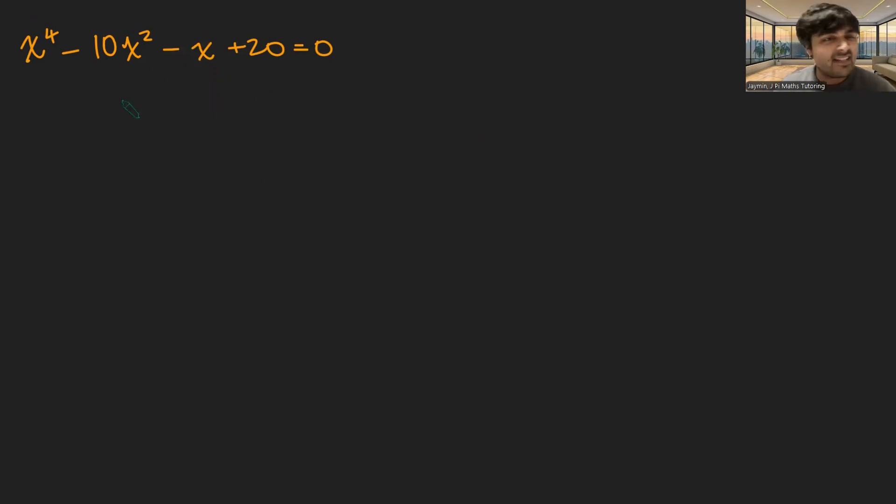What we're going to do is start by completing the square here. So we're going to get x squared minus 5, all squared, minus 25 minus x plus 20 equals 0. And if we just rearrange this, x squared minus 5 squared minus 5 equals x.